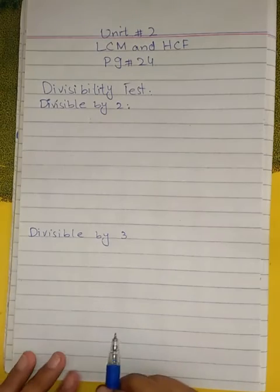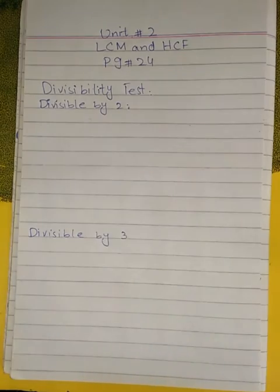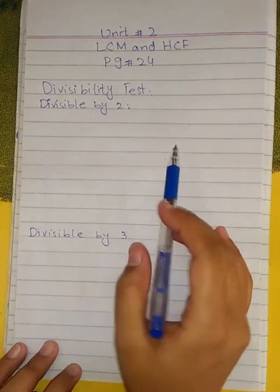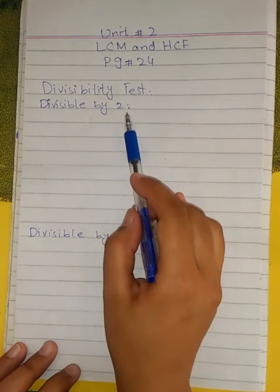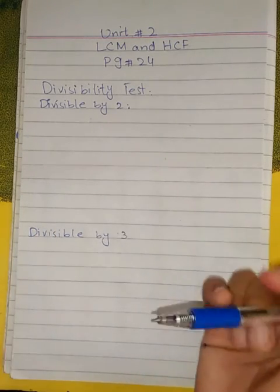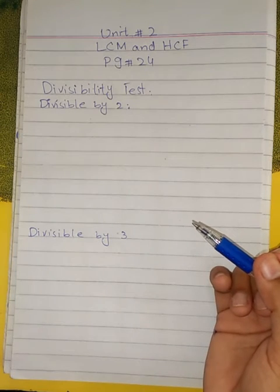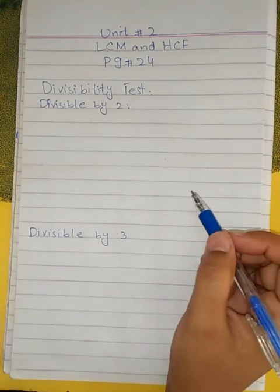Next, on page 24, before starting Exercise 2A, you need to do the divisibility tests — to check if a number is directly divisible by 2, 3, 4, 5, 8, 9, or 10.